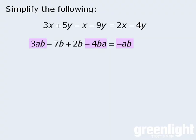which we can write as -ab. Next we have -7b + 2b, which simplifies to -5b. So the expression here simplifies to -ab - 5b.